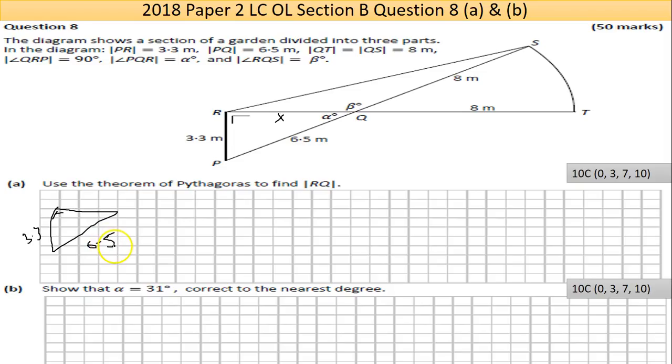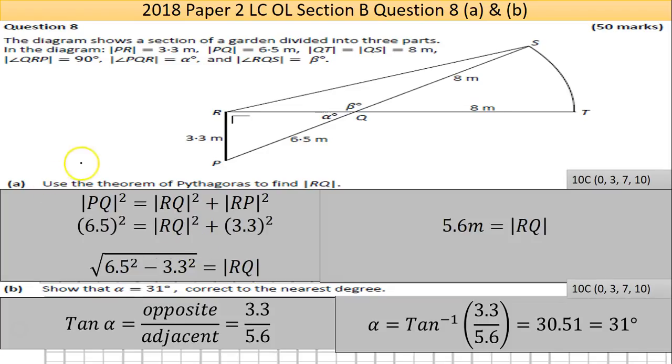I'll go to the answer. I have PQ squared equals RQ squared plus RP squared. So this is not standard because usually we look for the hypotenuse with the other two sides. In this case we have the hypotenuse, we don't have RQ, we're looking for that.